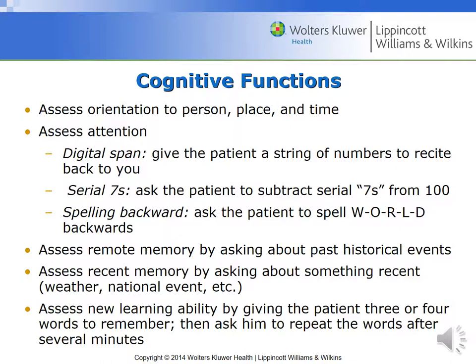When assessing cognitive functions, assess orientation to person, place, and time — alert and oriented times three. For orientation to person, have the patient state their own name and the names of relatives with them. For orientation to place, ask about their residence, the name of the hospital or clinic, or the city or state. For orientation to time, ask the time of day, day of the week, month, season, date and year, or how long they've been in the hospital. In settings like a nursing home where patients may not get out much, you can simply ask 'Is it daytime or nighttime?'